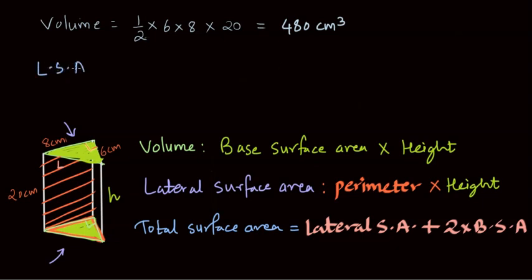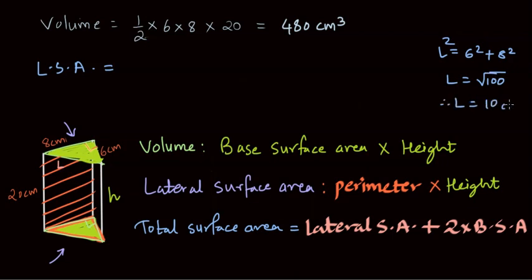For lateral surface area, we need the perimeter of the triangular base times the height. We already know two sides — 6 cm and 8 cm. The third side L can be found using Pythagoras' theorem: L² = 6² + 8² = 100, so L = 10 cm. The perimeter is 8 + 6 + 10 = 24 cm. Multiplying by the height of 20 cm gives a lateral surface area of 480 square centimeters.